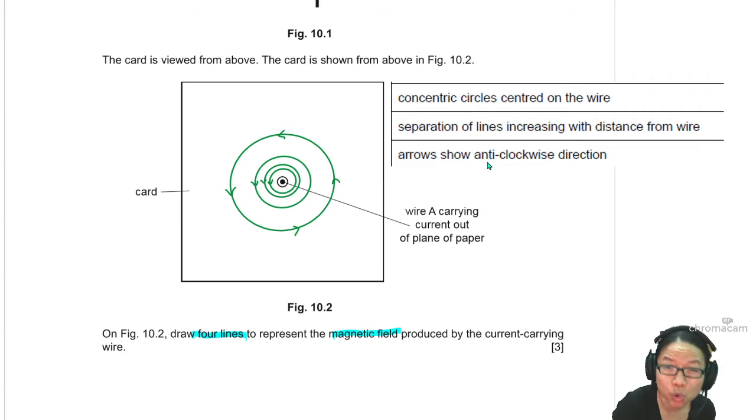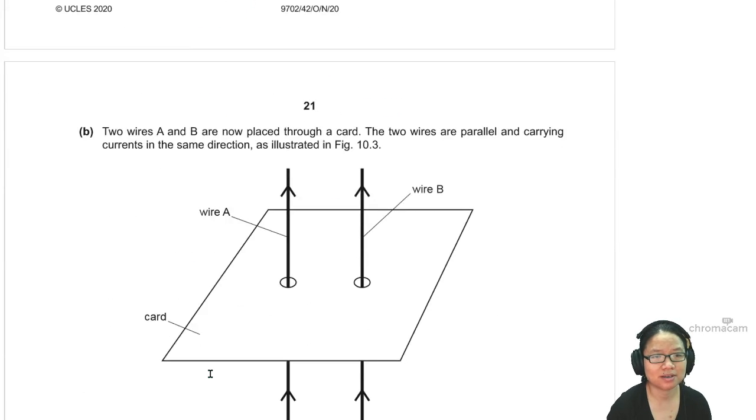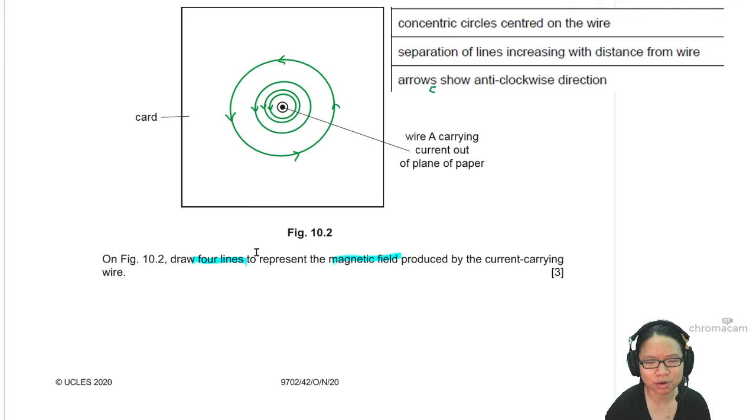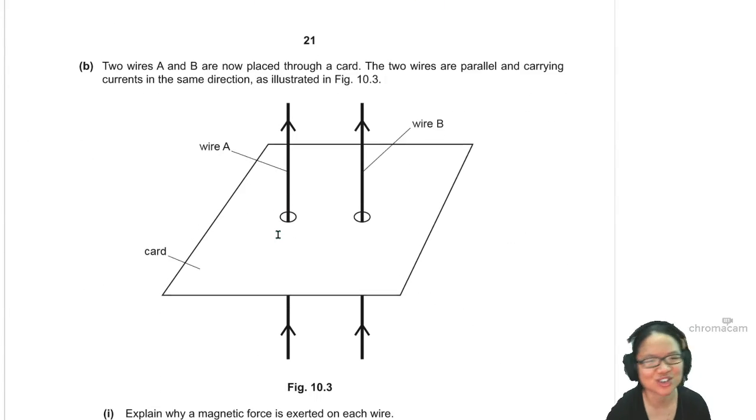Make sure you draw arrows. Separation increasing, concentric circles. Concentric here means it has a common center. Same center. Three marks. So easy, right? Remember the transformer? We write, write, write. Also three marks. This one is just this. Three marks. Very good.